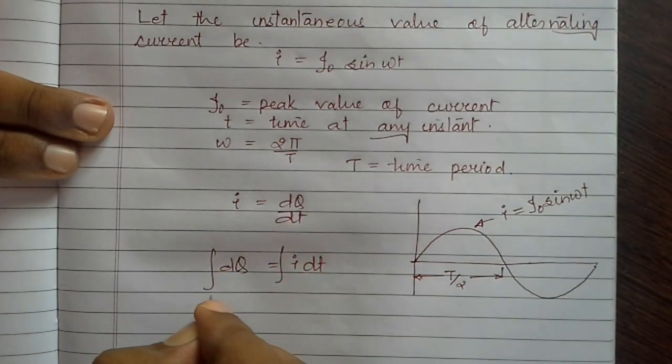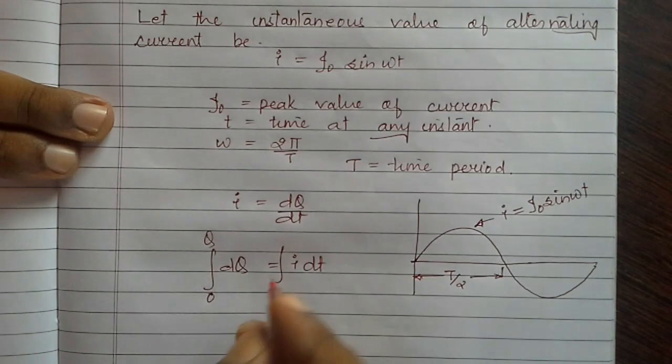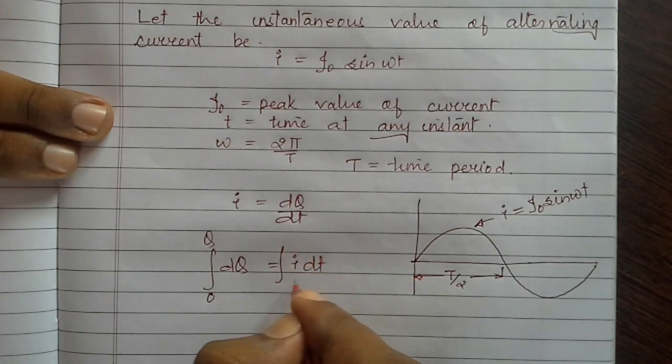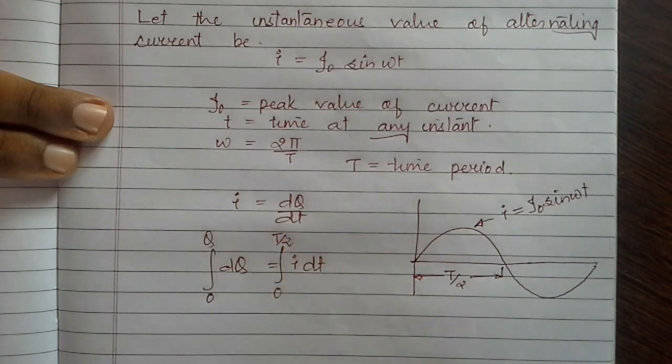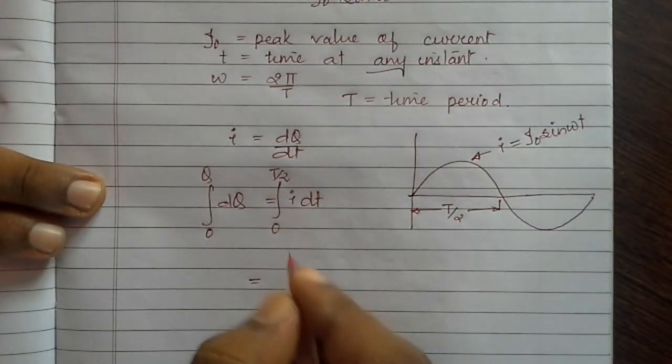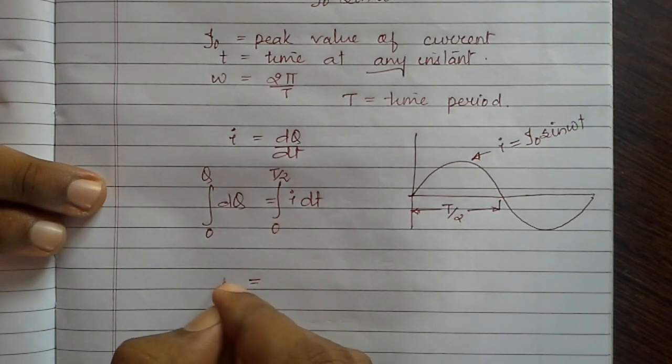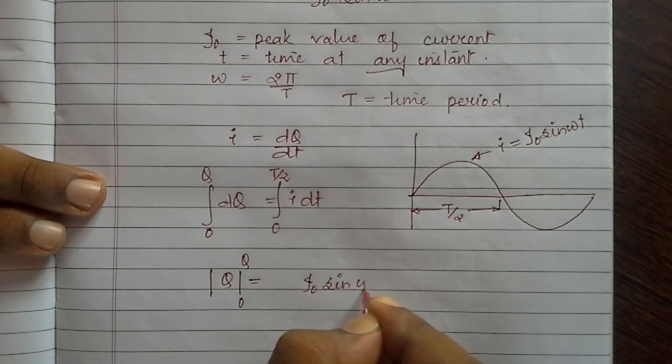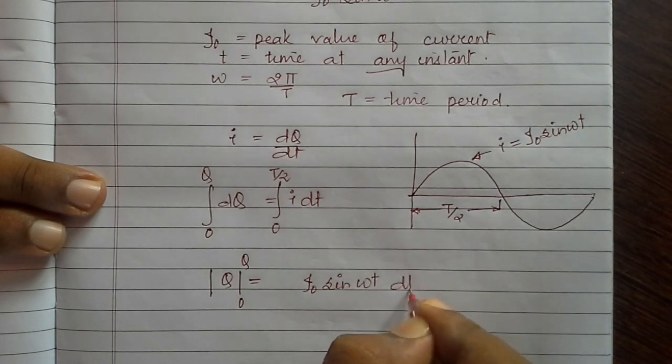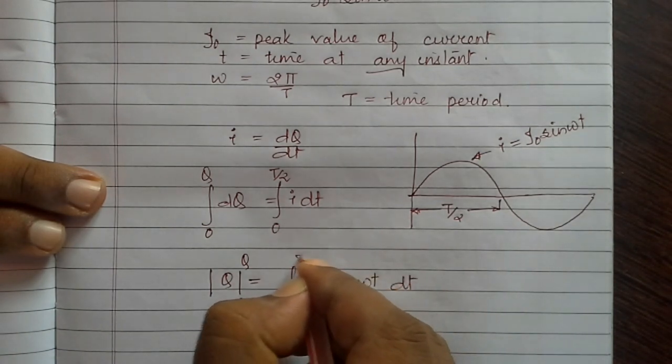Here we will integrate dq from 0 to q, that is the total charge, and time from 0 to T by 2. So we have integrating dq, q varying from 0 to q, equals i0 sin omega t dt, integration 0 to T by 2.